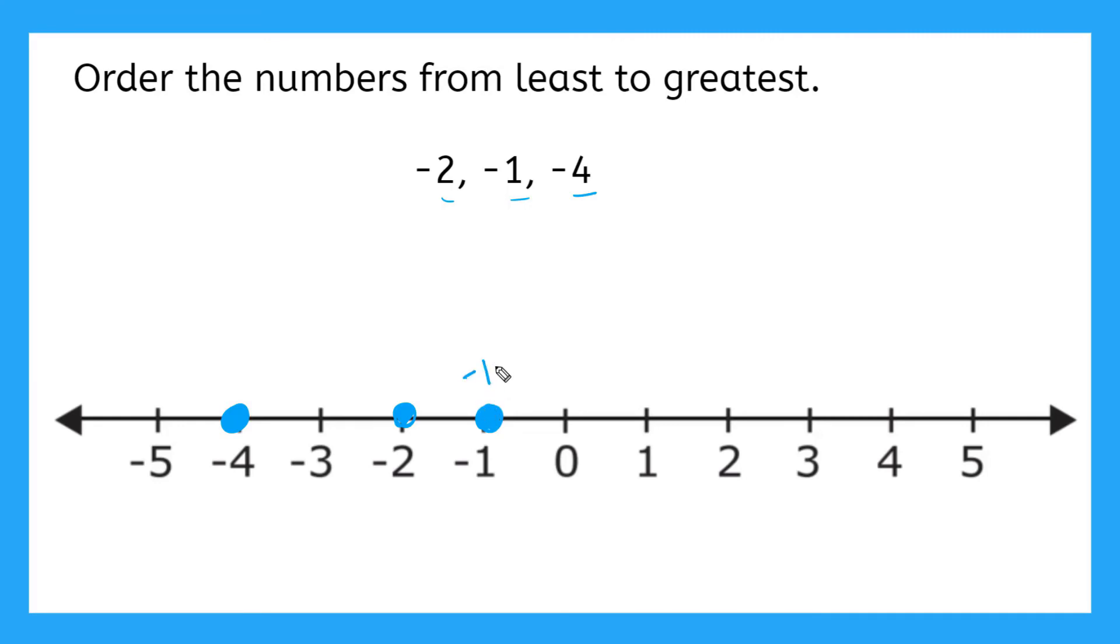So that goes to the end of our list. It's the greatest number. Now, which is the next closest to zero? Negative two or negative four? Well, negative two is only two spaces away. And four is over here at four spaces away. So negative two is the next closest to zero. So that would mean negative four is the smallest number in our list.